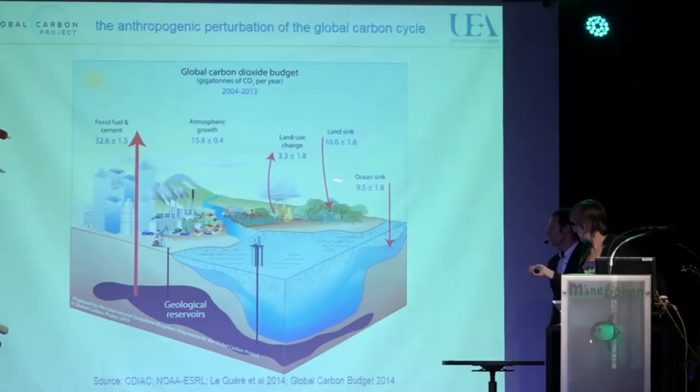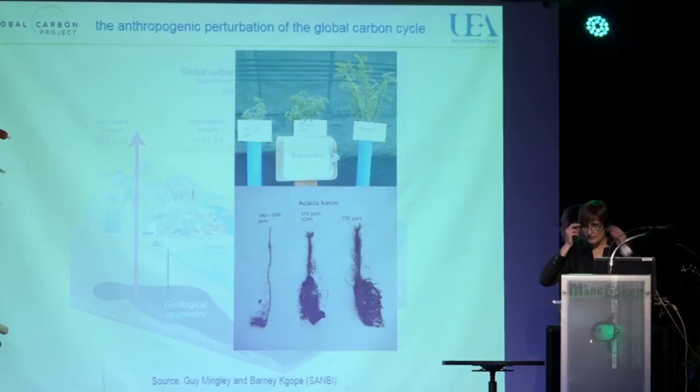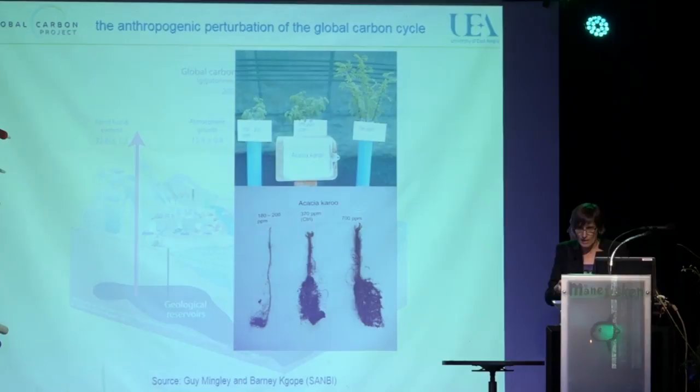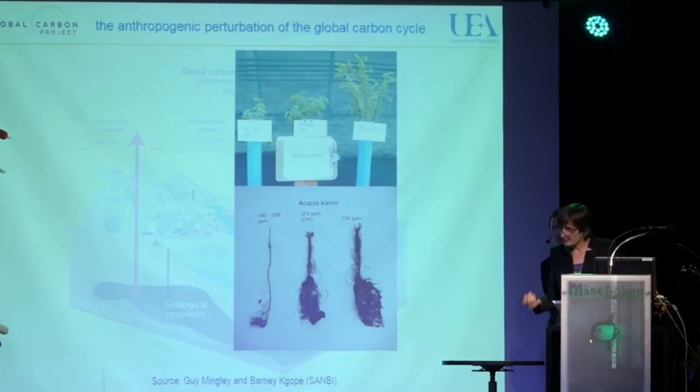I'm going to talk first about the carbon sinks. We know a lot about them. On land, we know this is a response of the vegetation: as CO2 increases, vegetation becomes more efficient at absorbing carbon, and it grows. As you can see in these experiments, the higher the CO2, the more the vegetation grows. But this enhanced growth will continue only until other limiting factors come into play, such as the availability of water, the availability of nutrients, or simply the physiological limits of the plants.